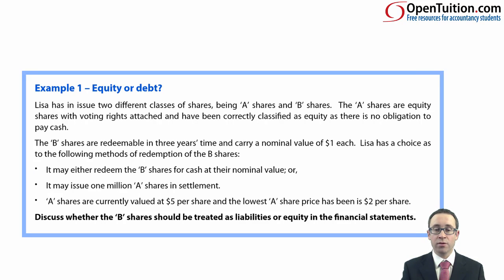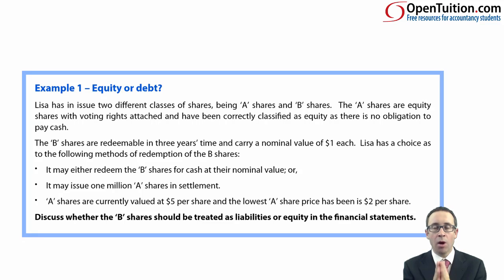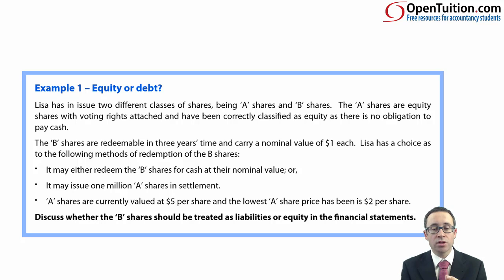The A shares are equity shares with voting rights and have been correctly classified as equity — there is no obligation to pay cash. The B shares are redeemable in three years' time, which usually means redeemable in cash. Those shares have a nominal value of $1 each. However, there is a choice of redemption methods: the shares can either be redeemed for cash at nominal value — taking the $1 — or the holder could instead take an A share as settlement.